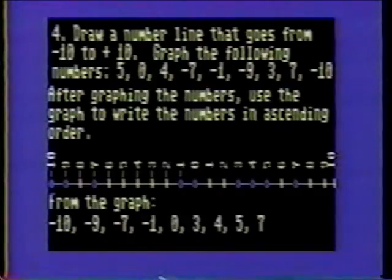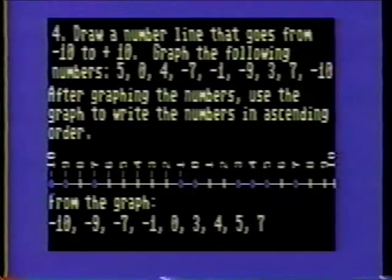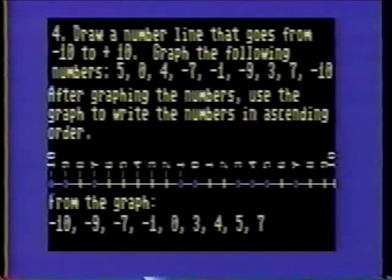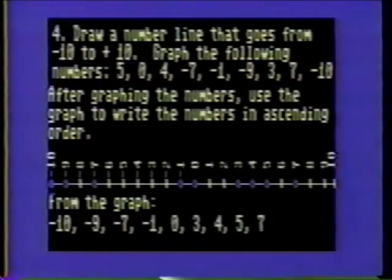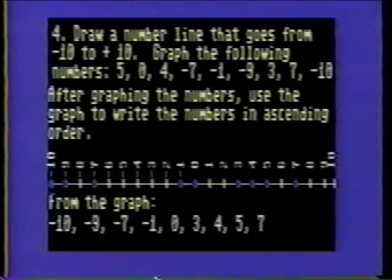Problem 4. Draw a number line that goes from negative 10 to positive 10. Graph the following numbers: 5, 0, 4, negative 7, negative 1, negative 9, 3, 7, negative 10. After graphing the numbers, use the graph to write the numbers in ascending order. Solution: First draw a number line from negative 10 to positive 10, then graph the points. Finally, read the numbers off the number line from left to right.